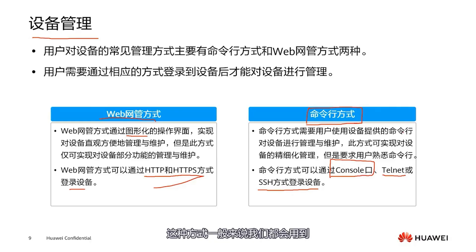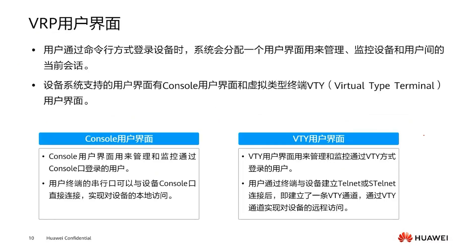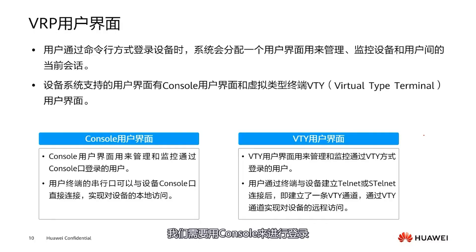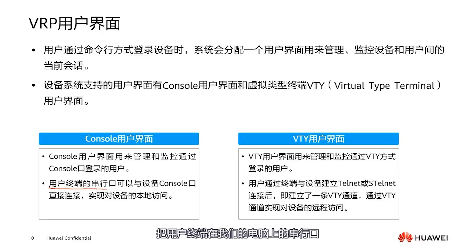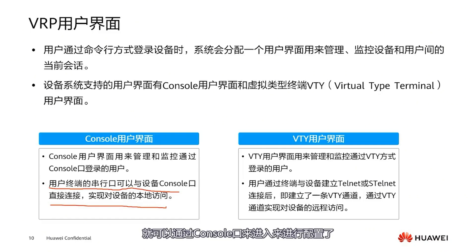These are our two management methods: web and command line. As traditional network engineers, we used the command line method more often. For the first login, we need to use the console. Using the console is very simple — connect the serial port of our user terminal, our computer, directly to the device's console port. Then with specific terminal software you can access via the console port and start configuring.